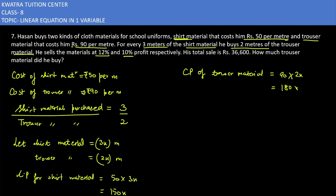Now Hassan sells the material at 12 percent profit on shirt and 10 percent on trouser. Let's find out how much profit he made. Profit is calculated as profit percent times cost price. Profit on shirt is 12 percent, which is 12 over 100 times cost price 150x. When we simplify, 12 and 15 multiply to give 180, which when divided by 100 equals 18x.